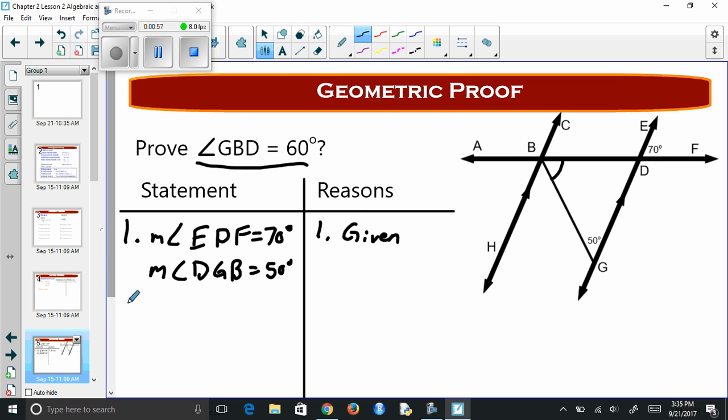Second thing we need is if this is 70, the cross from here is also going to be 70. So measure of angle BDG is equal to 70 degrees. And why do we know that? Because we know vertical angles are always congruent.